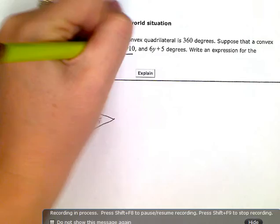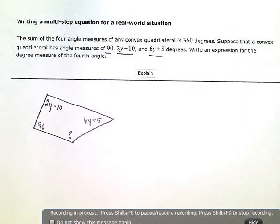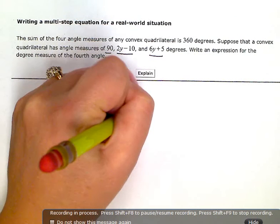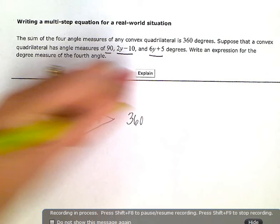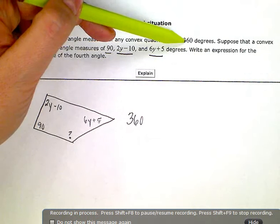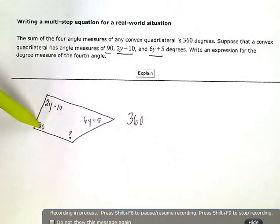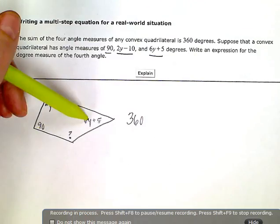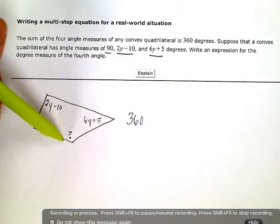So write an expression for the degree measure of the fourth angle. Well, I know that all four of these have to add up to 360 degrees. So I'm going to start there and work backwards. So I know I'm going to have to start with 360 degrees, and then I have to subtract out those three so that I'm left with whatever this angle will be.